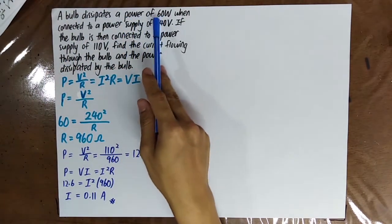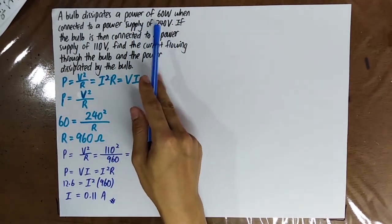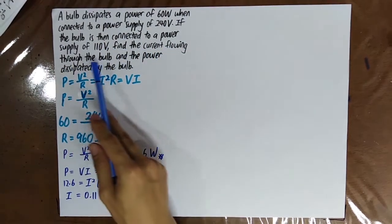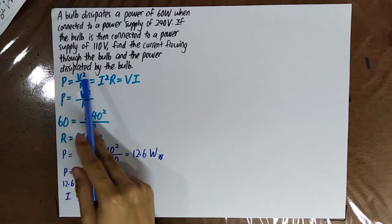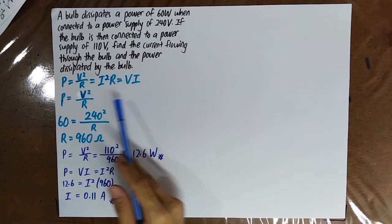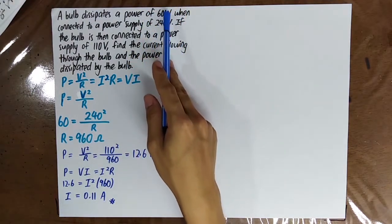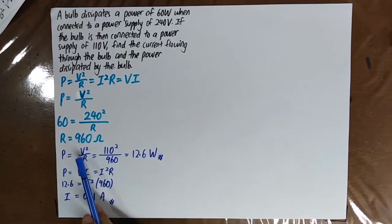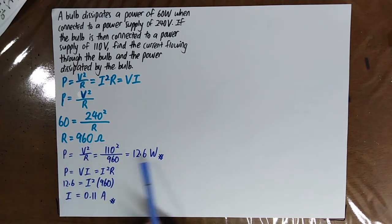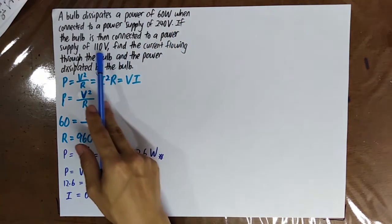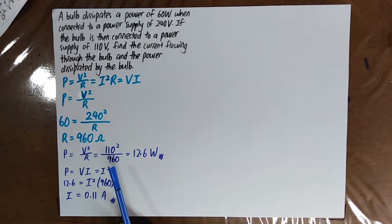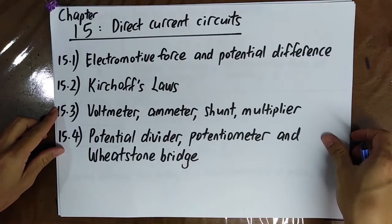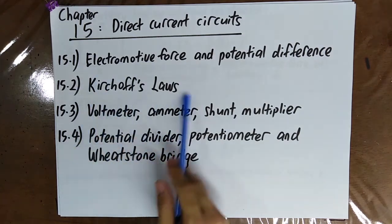A bulb dissipates 60 W when connected to a 240 V power supply. If the bulb is then connected to a 110 V supply, find the current and power dissipated. Using P equals V squared over R equals I squared R equals VI, and given only power and voltage initially, first find the resistance. Since the bulb is the same, the resistance stays constant. Then find the power dissipated at 110 V and the current using P equals VI or P equals I squared R. In the next video, we will be talking about Kirchhoff's laws.